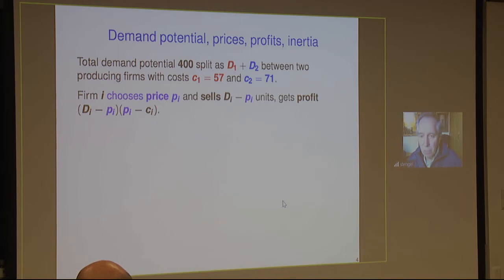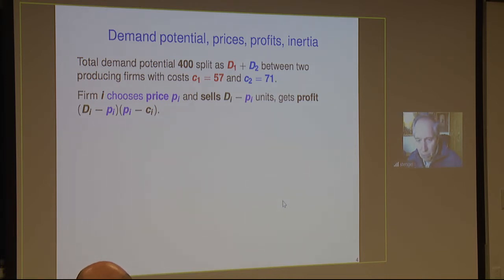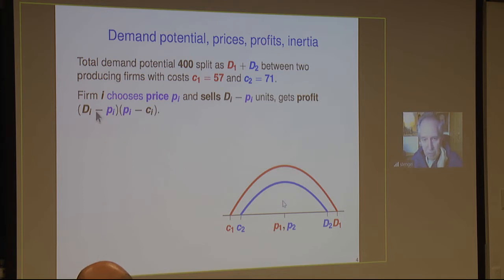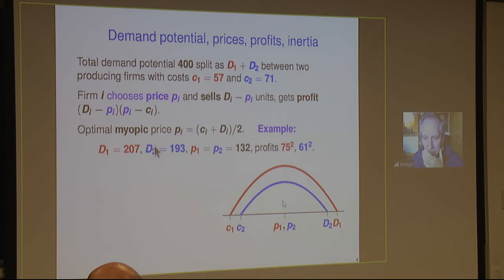Each dollar more in price sells you one unit less, but gives you one unit more of profit per unit. Profit is simply price minus cost. We ignore fixed costs. The profit function is quadratic with two zeros when P equals Di and P equals Ci, so the maximum — the myopic price — is achieved at P equals (Ci + Di) / 2. If the demand potential is split such that it shifts according to the cost difference of 14, both players have the same optimal myopic price of 132, with profits of 75 squared and 61 squared respectively.